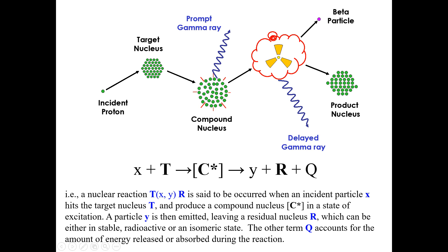A nuclear reaction is said to occur when an incident particle — here a proton, represented by X — hits a target nucleus. When this incident particle hits the target nucleus, a compound nucleus is produced in a state of excitation, as shown in the figure.